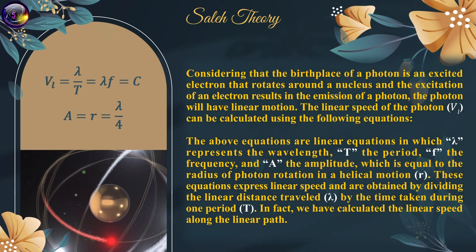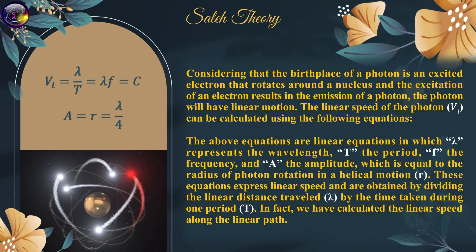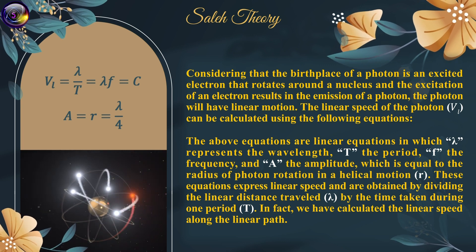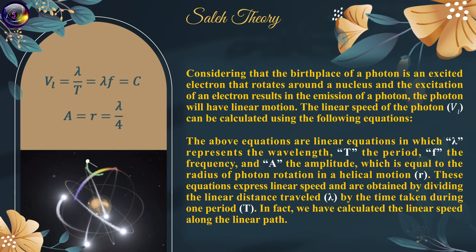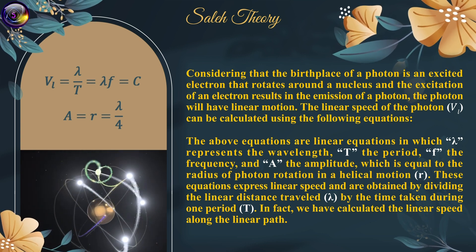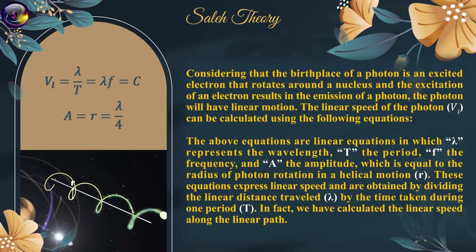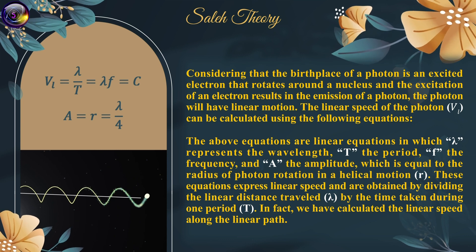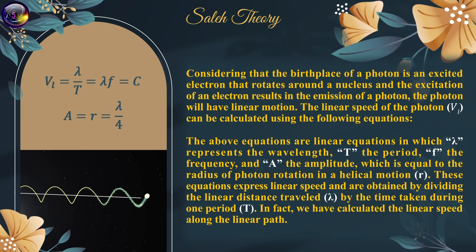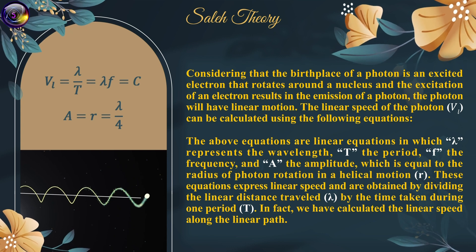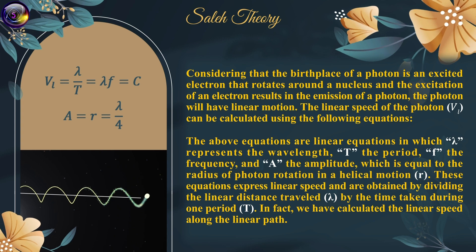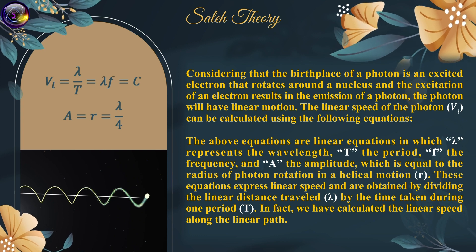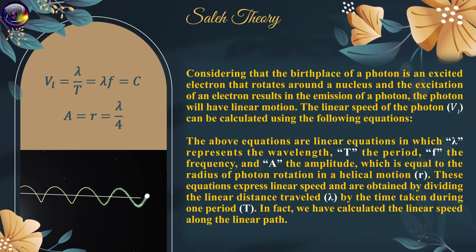Considering that the birthplace of a photon is an excited electron that rotates around the nucleus, and the excitation of an electron results in the emission of a photon, the photon will have linear motion. The linear speed of the photon, v_L, can be calculated using linear equations in which lambda represents the wavelength, p the period, f the frequency, and a the amplitude — equal to the radius of photon rotation in helical motion. These equations express linear speed obtained by dividing the linear distance traveled by the time taken during one period.